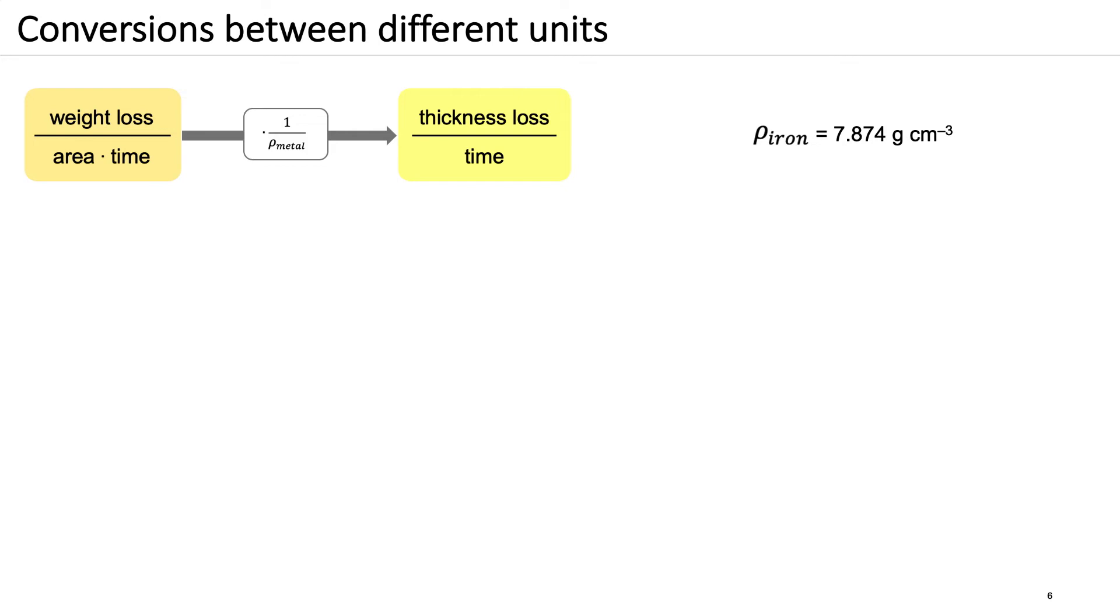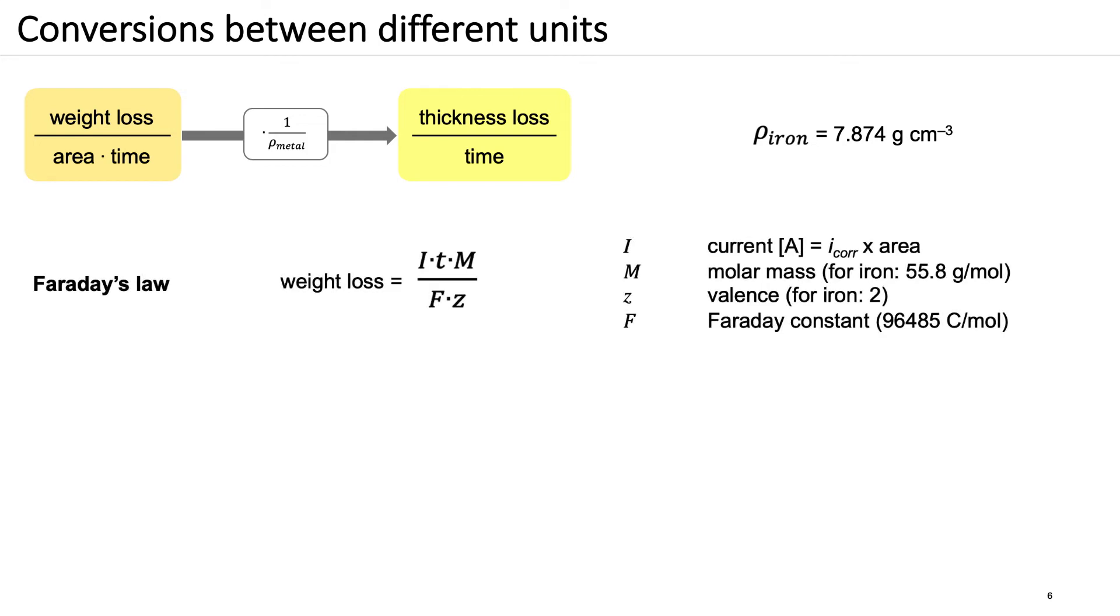To convert between the scientific units based on electrical current to units based on weight or thickness loss, we can rely on Faraday's law of electrolysis. This law means that the electrical charge passed is equivalent to the lost metal weight.